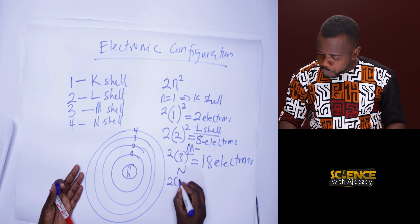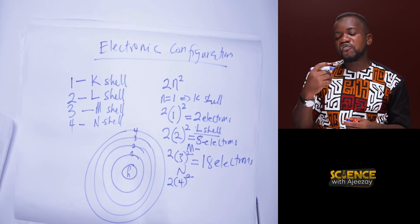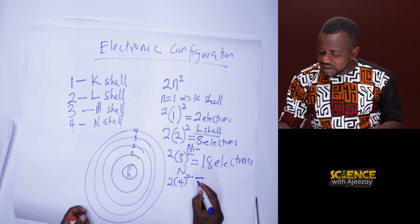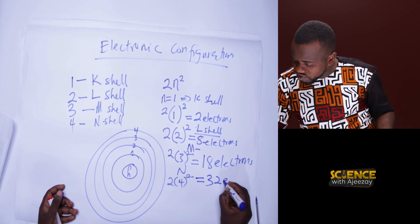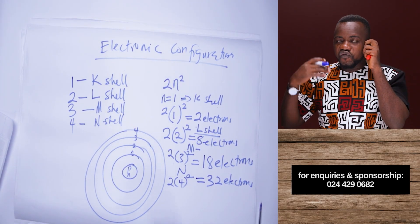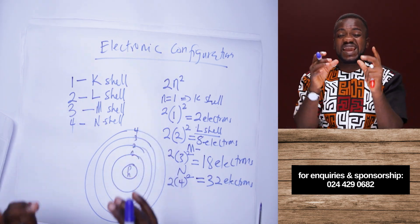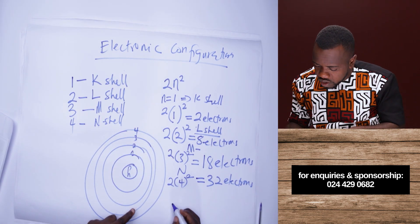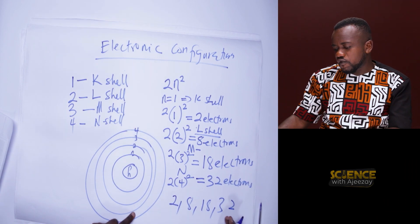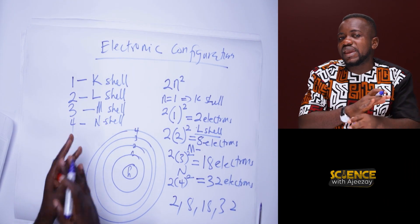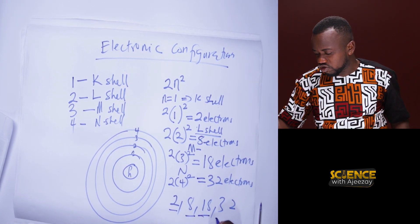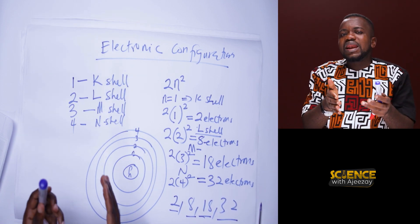For the fourth shell (N shell), n = 4: 2 × 4² = 2 × 16 = 32 electrons. So the fourth shell can hold 32 electrons. Summarizing the K, L, M, N shells: 2, 8, 18, 32 electrons respectively.